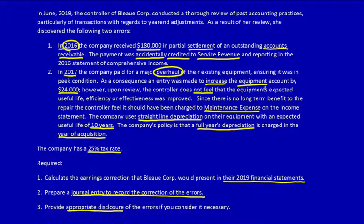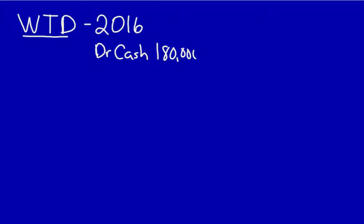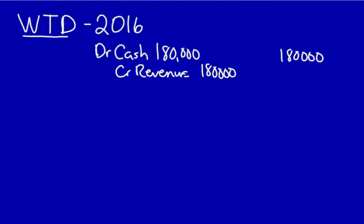The first thing I'm going to deal with is the 2016 issue. The way I think about an error correction is what they did — what occurred in that year and what they actually did in the financial records. In 2016, we know that they recognized $180,000 of cash as revenue. So there must have been a debit to cash of $180,000 and a credit to revenue of $180,000. There were also tax implications. The tax rate was 25%, so $180,000 of revenue taxed at 25% would be $45,000 of income tax.